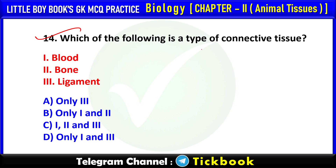Q14. Which of the following is a type of connective tissue? Option number C: 1, 2, and 3 — blood, bone, and ligament.